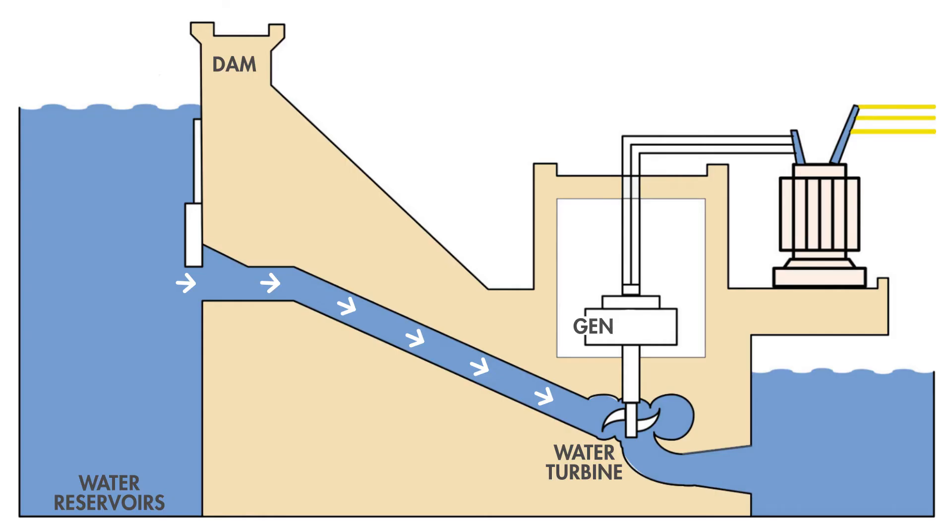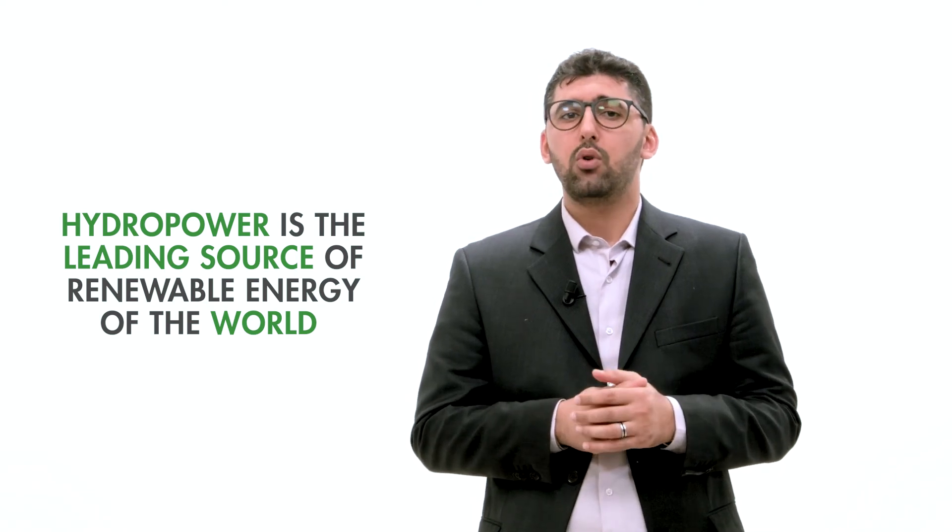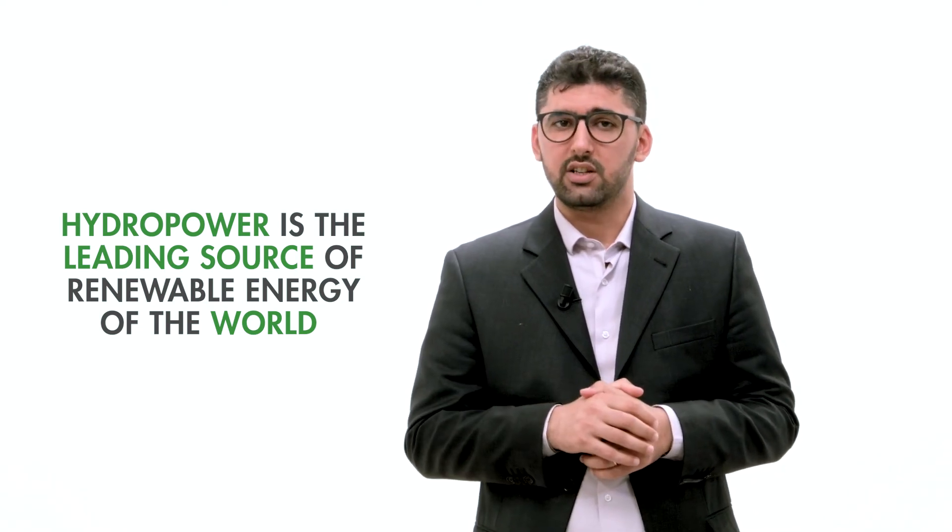In simple words, falling water spins the water turbine. The turbine drives the generator, which is coupled to it, and converts the mechanical energy into electrical energy. This is the basic working principle of the hydroelectric power plant. Hydroelectric energy, or simply called hydropower, is the leading source of renewable energy in the world for electricity generation. Nearly 7% of the energy consumed in the world is generated by hydroelectricity.